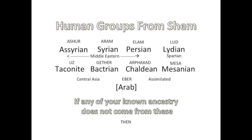These are the first human groups attributed to Shem's sons. Some of these people we can recognize as modern peoples like the Assyrians, Syrians, and Persians. Some of these no longer exist, like the Takenite, Chaldean, and Spartan, who are said to have been wiped out or assimilated with other groups.